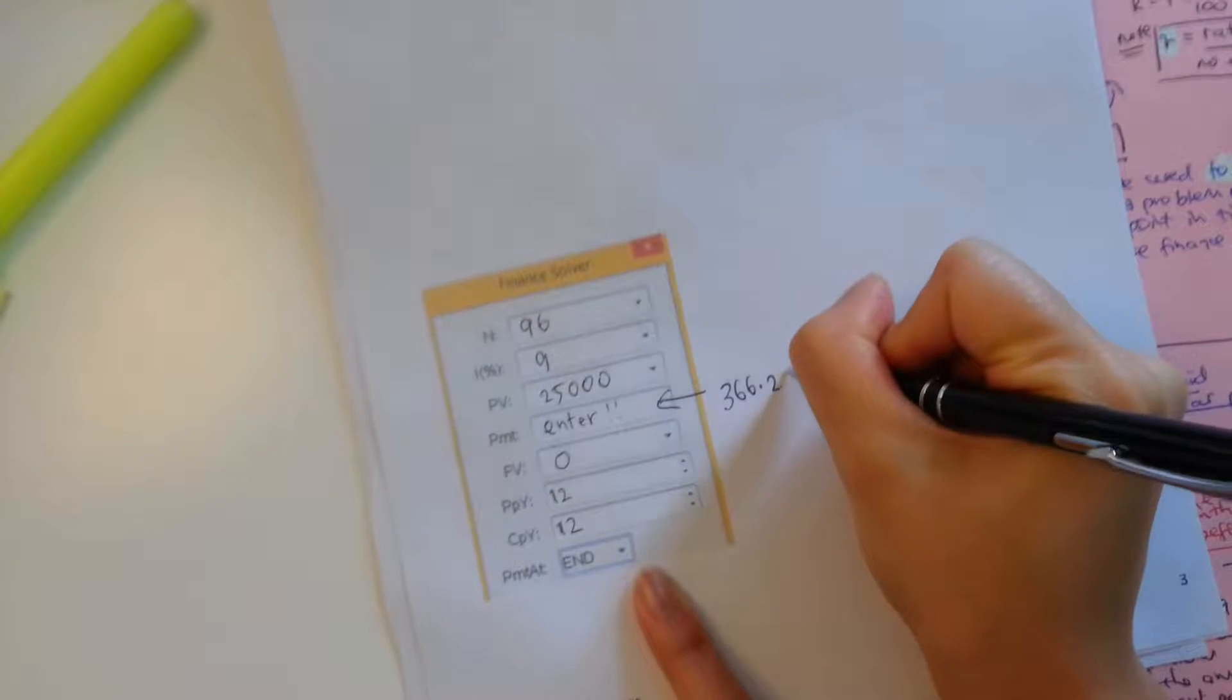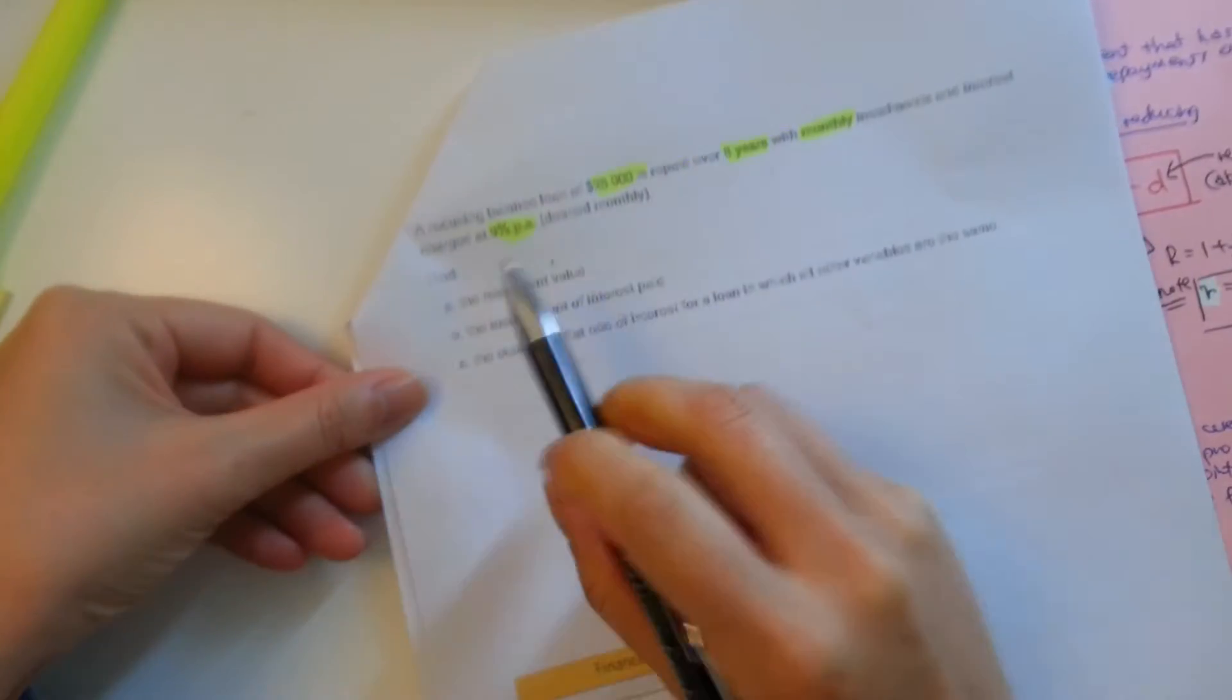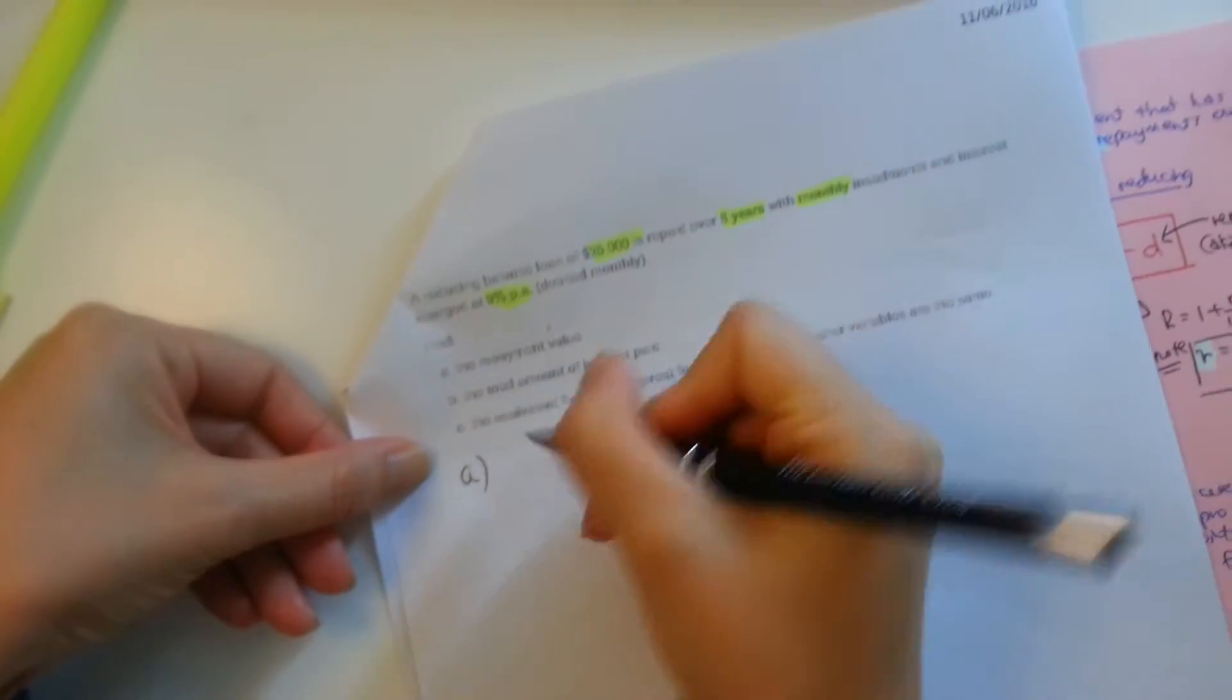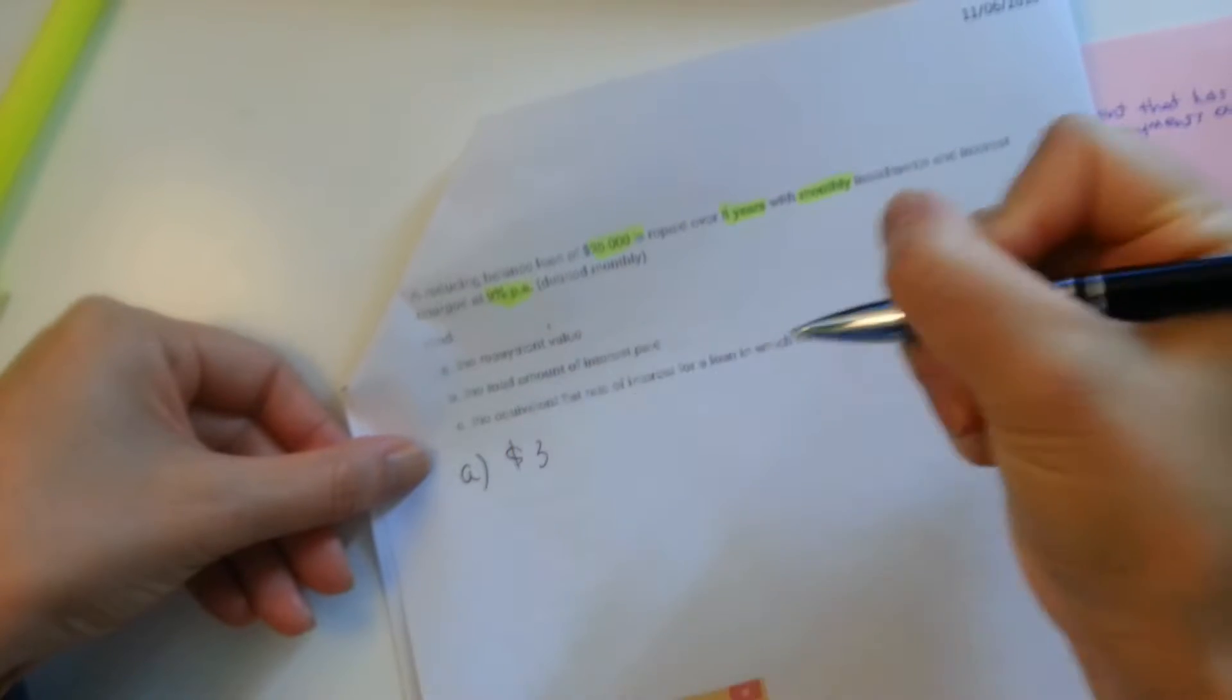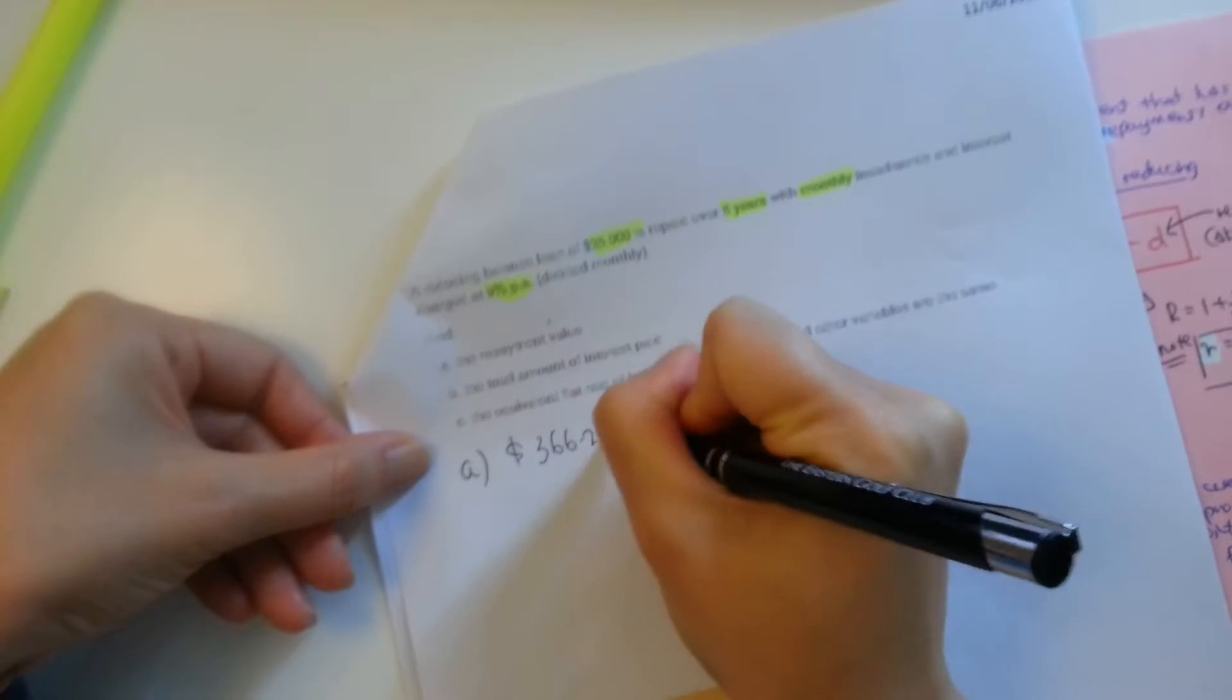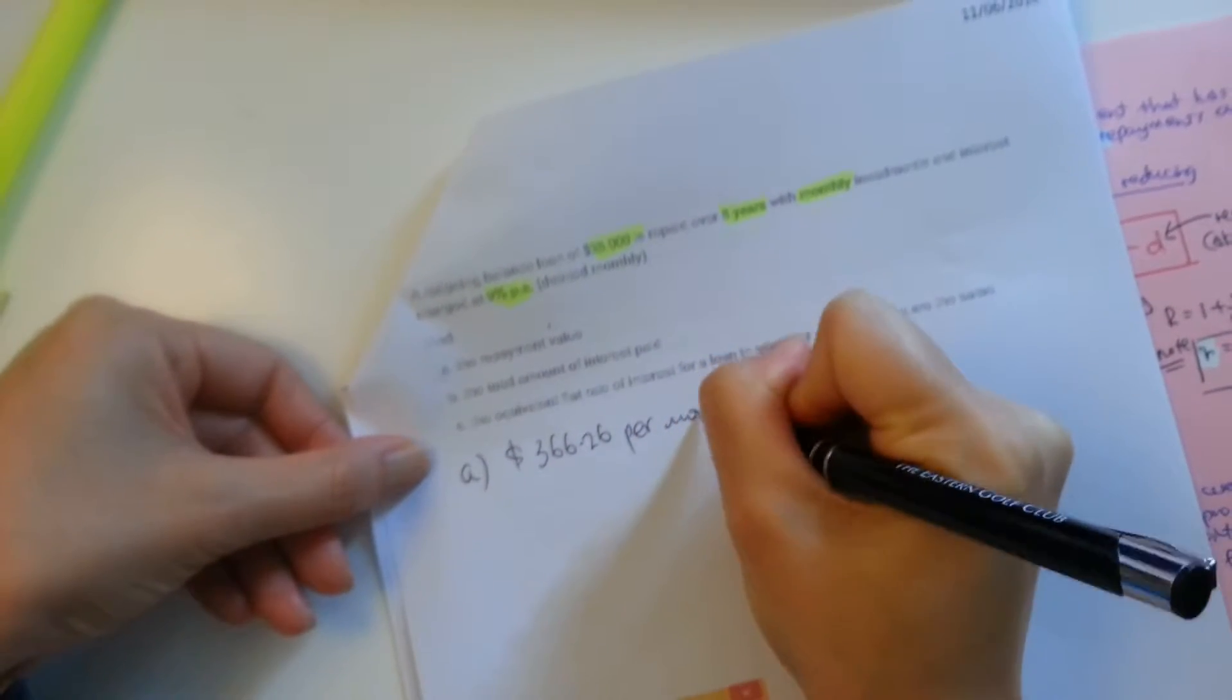And I get a value of $366.26, rounded to the nearest cents. So the repayment value, question A, repayment is going to be $366.26 per month or monthly.